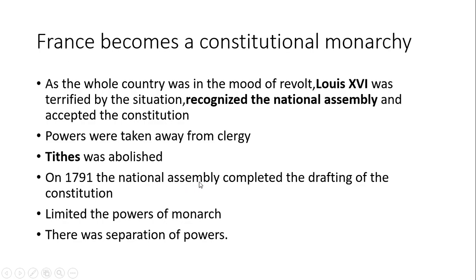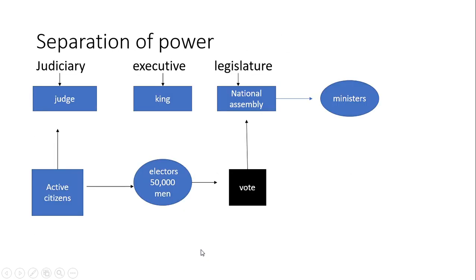In 1791, the National Assembly completed drafting the constitution, which limited the powers of the monarch. There was a separation of powers: the Judiciary had an elected judge, the Executive was the king, and the Legislature was the National Assembly. The National Assembly was elected by active citizens — the electors — of whom there were 50,000 men. Ministers were elected from the National Assembly.